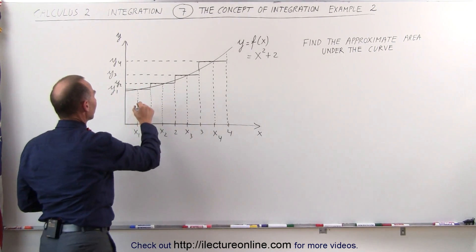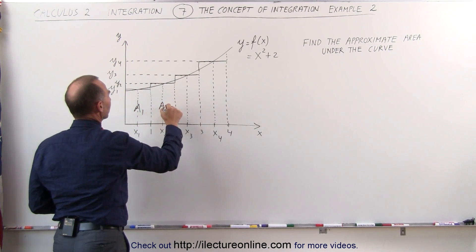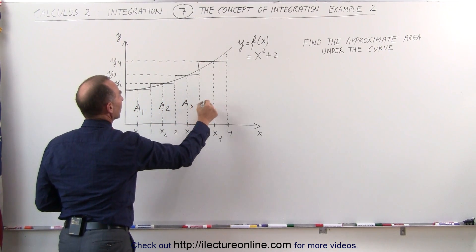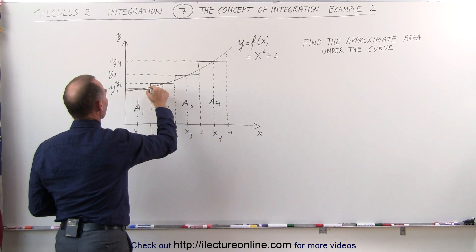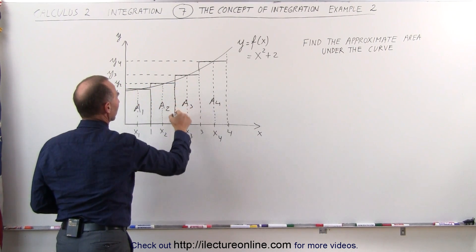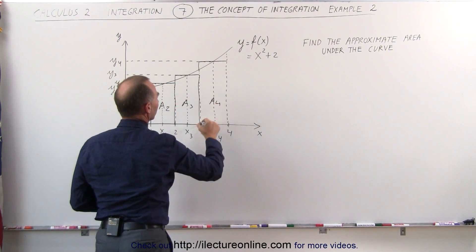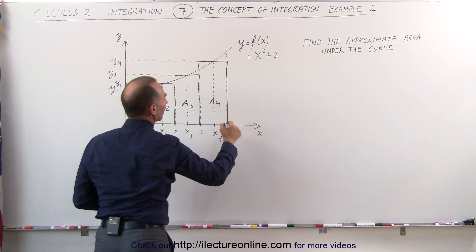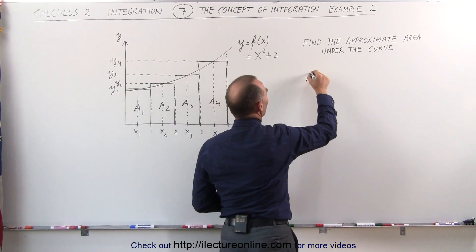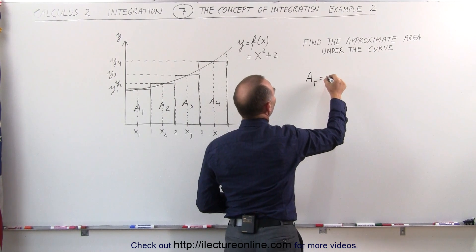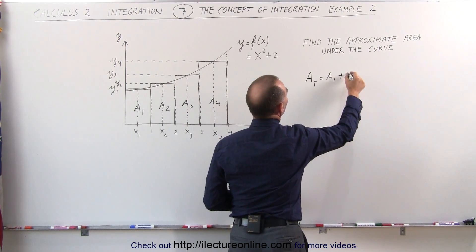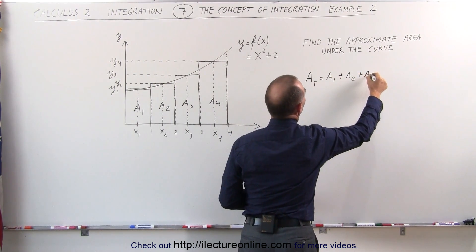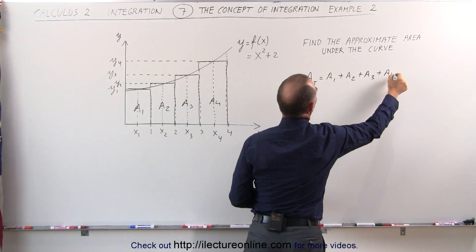If we call this a sub 1, call this a sub 2, call this a sub 3, and a sub 4, so this would be the first rectangle, the second rectangle, the third rectangle, and the fourth rectangle, we can then say that the total area is simply the sum of a1, plus a2, plus a3, and plus a4.